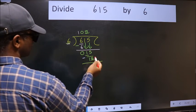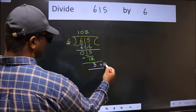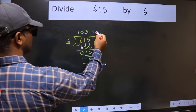No more numbers to bring it down, so we stop here. This is our remainder and this is our quotient.